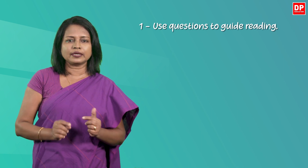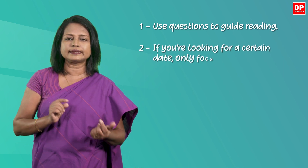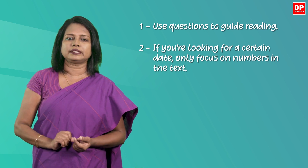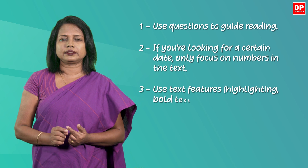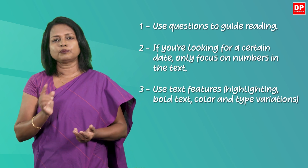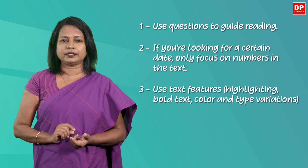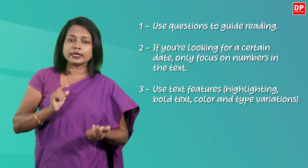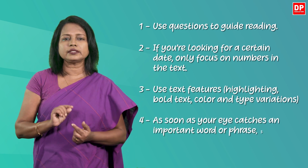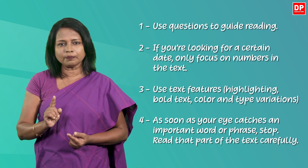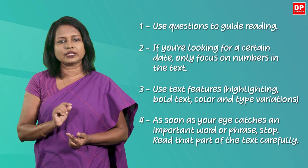Let's see how you can find specific information quickly. There are some guidelines to help you do it better. First, you have to know what you are looking for, so you can use questions to guide your reading. For example, if you are looking for a certain date, only focus on numbers in the text. Then use text features — that is highlighting, bold text, colour and type variations — to support your reading. And then as soon as your eye catches an important word or phrase, stop and read that part of the text very carefully.